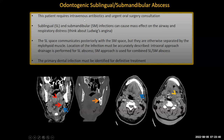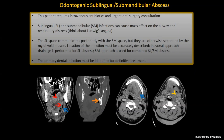This patient requires intravenous antibiotics and an urgent oral surgery consultation. Sublingual and submandibular infections can cause mass effect on the airway and respiratory distress. You should think about Ludwig's angina, which has been described in people with fast, clinically deteriorating, toxic appearance associated with airway compromise, generally secondary to mass effect from a sublingual floor-of-mouth or submandibular infection.